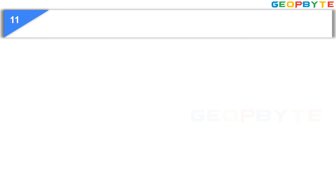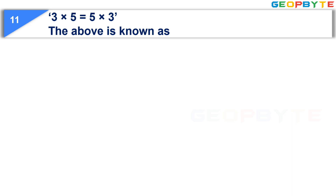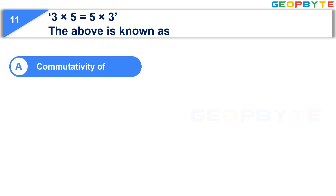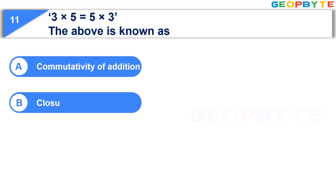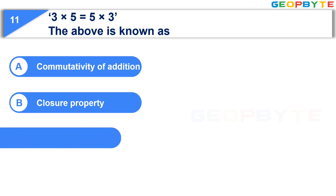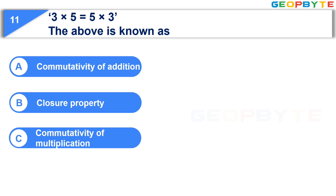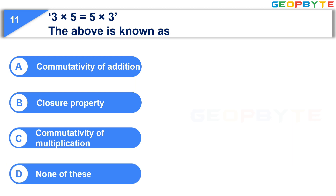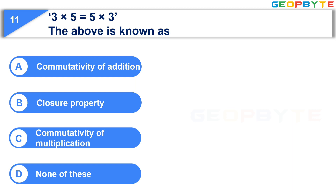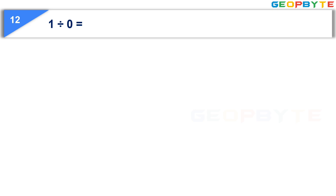The 11th question is: 3 × 5 = 5 × 3. The above is known as. Option A: Closure property. Option B: Commutativity of multiplication. Option C: None of these. Your time starts now. Your time is up and the correct answer is Option C: Commutativity of multiplication.